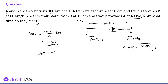So 3 hours after 10 AM they are meeting, which is 1 PM. The meeting time is 1 PM — at 1 PM the two trains will meet. This is a very simple question.